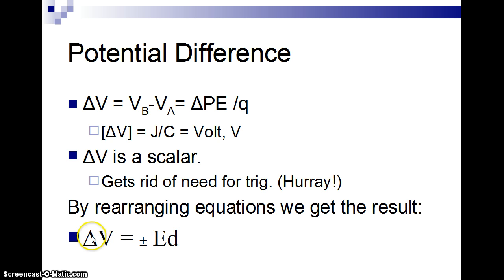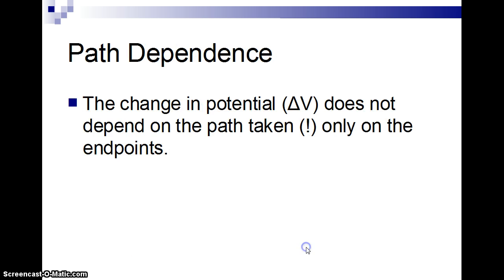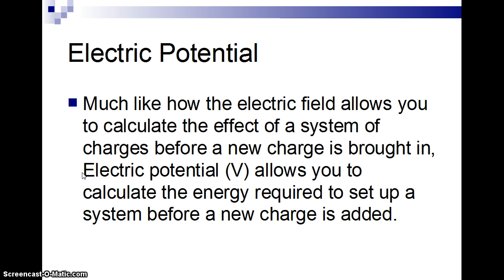So we can rearrange our equations and get, basically, our voltage difference is plus or minus E times D, plus when we're going against the electric field, minus when we're going with it. Nice thing about it, the change in potential doesn't depend on the path taken, only on the endpoints if we assume this constant result. So basically, what we're going to do with electric potential is show the energy as we're moving things around, as we're adding charges. And most of the examples we're going to do at this point, unless we're dealing with point charges, we're going to be dealing with constant electric fields.